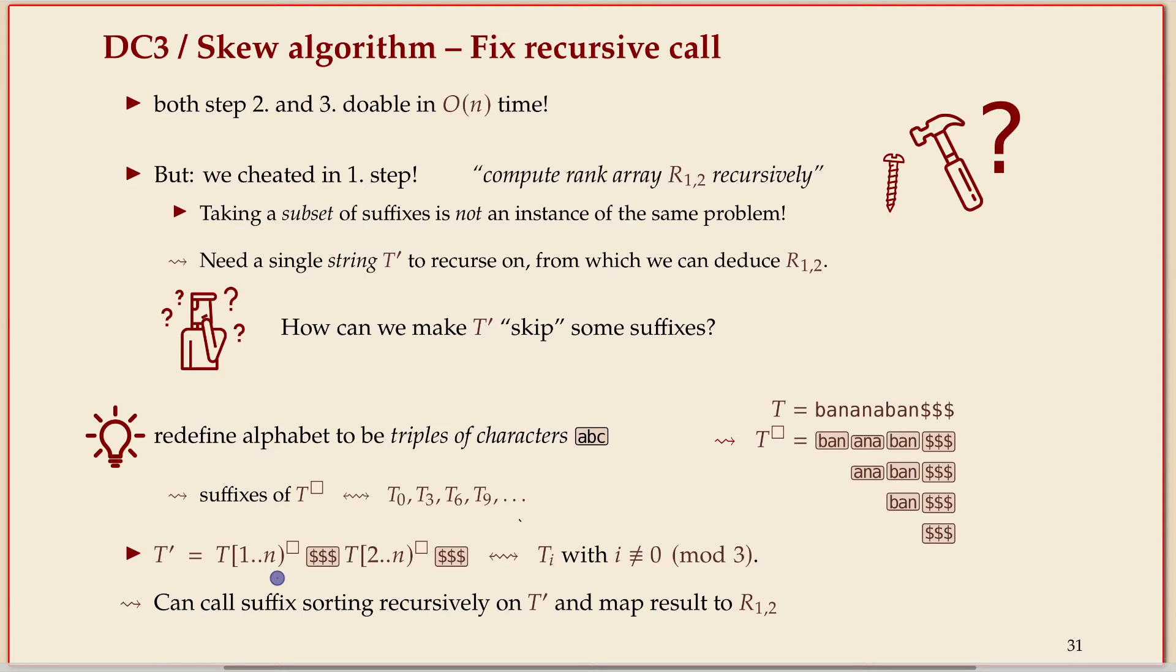You take your string but you start at the first character at index one, you delete the first character and then apply this boxing operation. Then you append the string another time but you leave off the first two characters and then do the boxing. In this string all the boxes start at one modulo three, in this string all the boxes start at two modulo three.